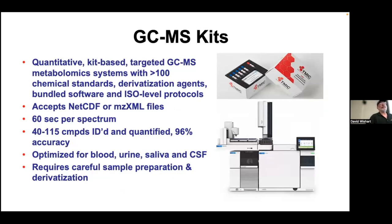There are also GC-MS kits—a quantitative approach that can measure up to 100 chemical standards, bundled with those standards, derivatization reagents, and software. It accepts a variety of files, is very fast, and gives very high accuracy identification. It can run on several different sample types—we'll work with one specific to urine. It requires some sample preparation and derivatization, which is what you have to do with GC-MS.